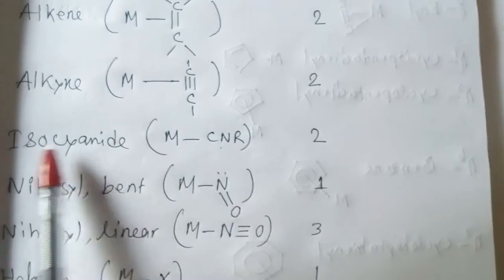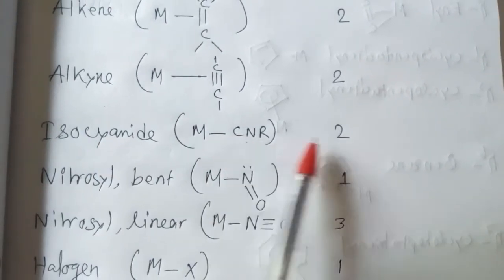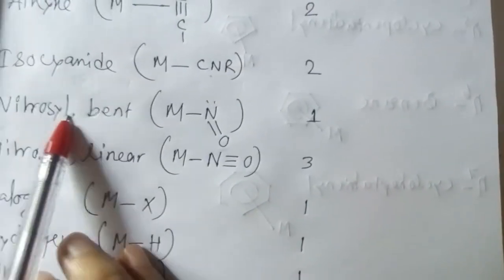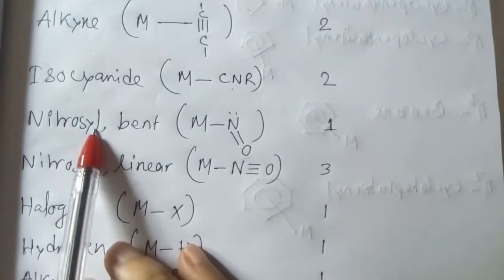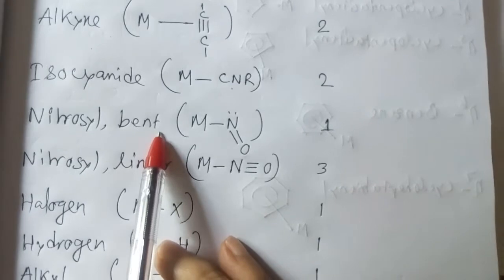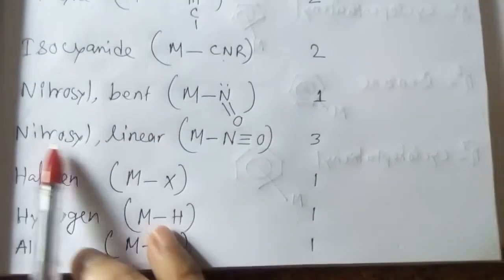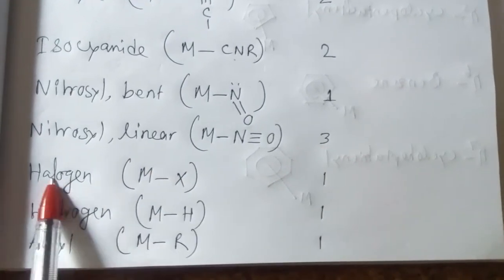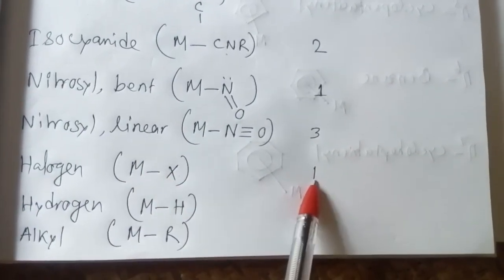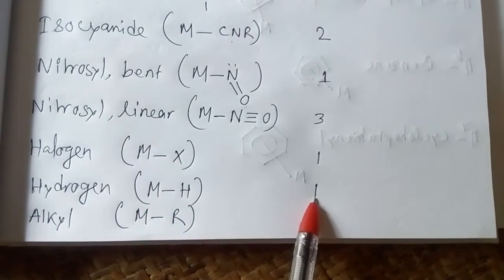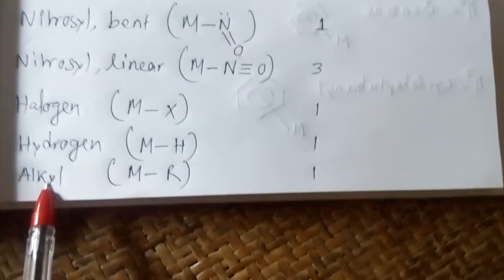Nitrosyl is very important: if bent shape, the electron count is one; if linear, the electron count is three. Halogen is one. Hydrogen is one — here is the structure.